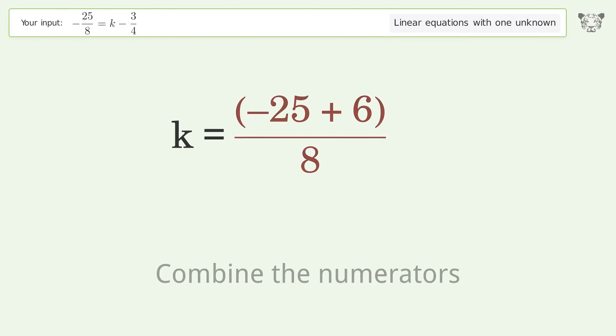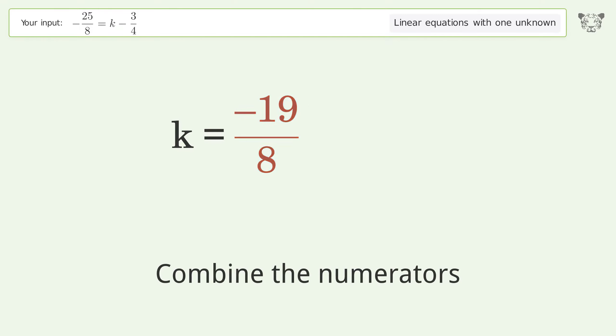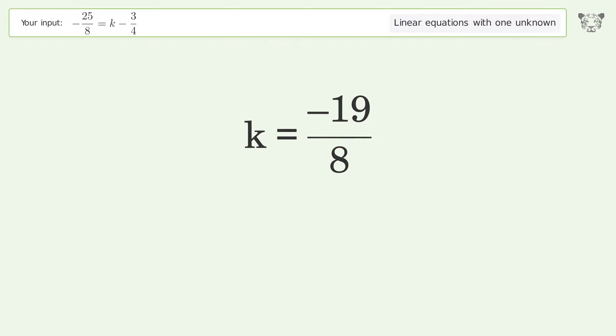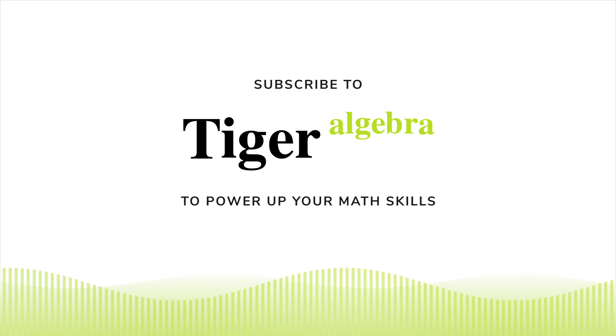Combine the numerators. And so the final result is k equals negative 19 over 8.